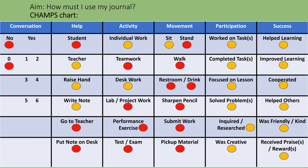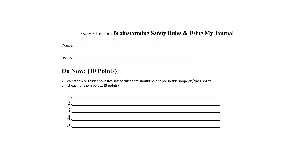You must work individually for the following activity. You will begin working on the handout titled Brainstorming Safety Rules and Using My Journal. Remember to write your name and period number. You will begin working on Part A: brainstorm or think about 5 safety rules that should be obeyed in this shop, lab, or class. Write or list each of them below. This activity is worth 5 points.